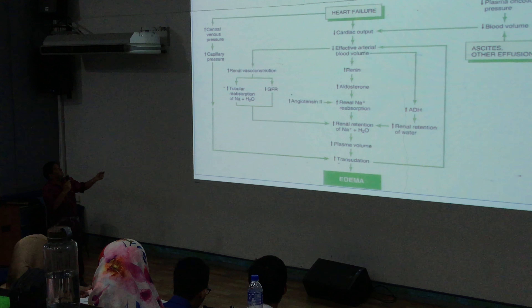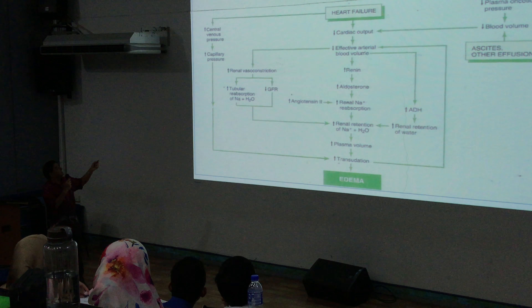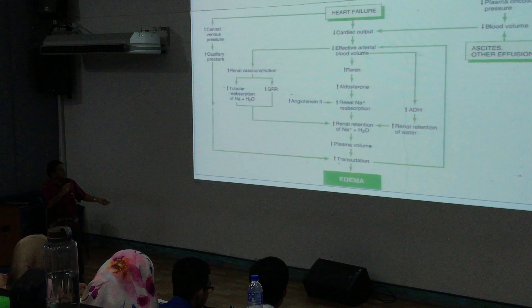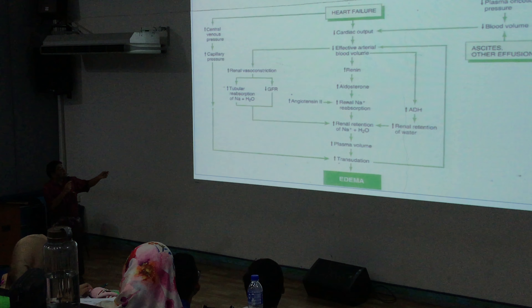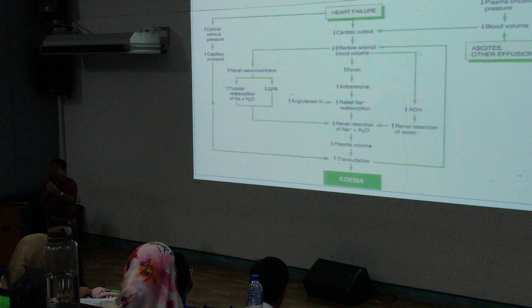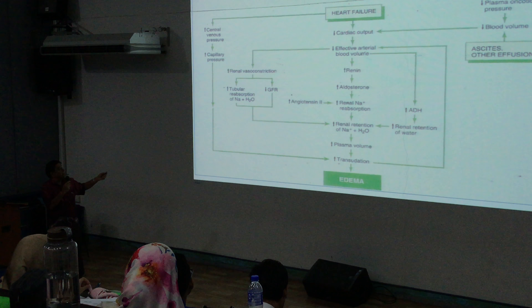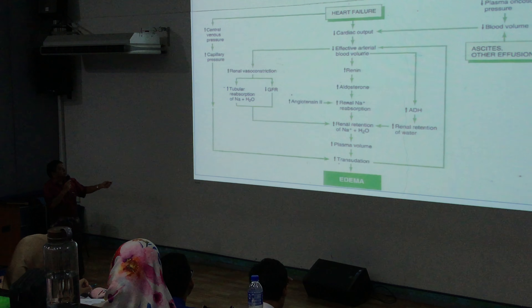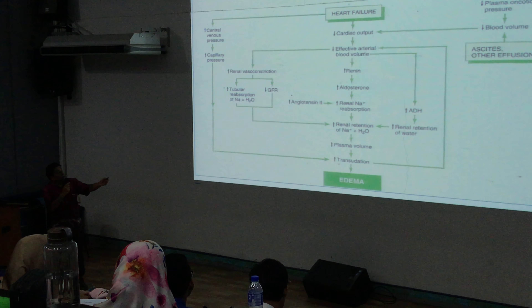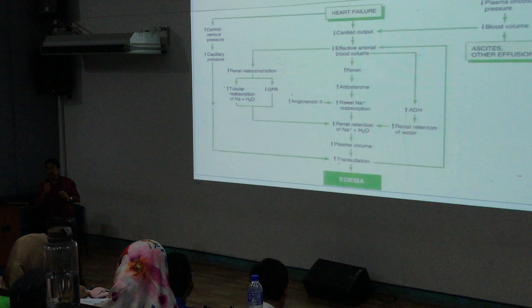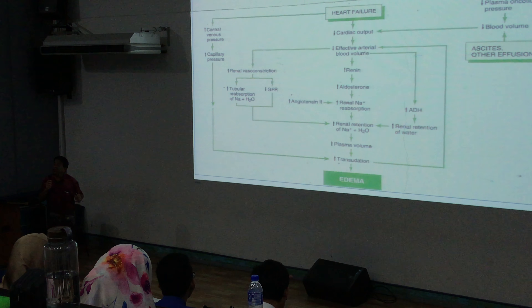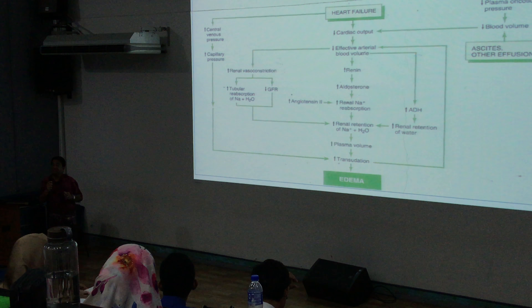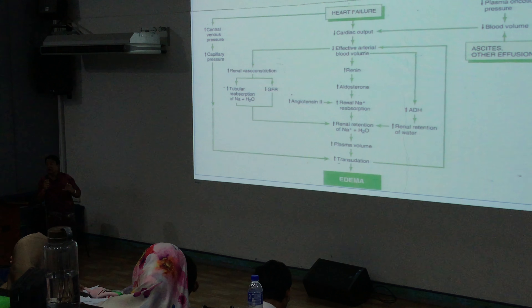Heart failure also leads to an increase in central venous pressure, increased capillary pressure, and transudation — formation and transfer of fluid — causing edema. Increased renal nerve constriction because of reduction in cardiac output leads to renal retention of sodium and water. So the heart function is suffering, and that is leading to edema because of normal metabolic responses in the body — the triggering of the renin-angiotensin-aldosterone mechanism because of reduction in overall renal perfusion. Renal perfusion means the amount of blood passing through the kidney per minute.